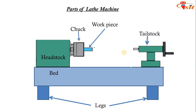Next is the tailstock. It is located at the right-hand end of the lathe bed. It has two main uses: it supports the other end of the work when it is being machined between centers, and it holds the tool for performing operations such as drilling, reaming, and tapping. We can insert a drill tool at the tailstock so that it will perform the operation very effectively.